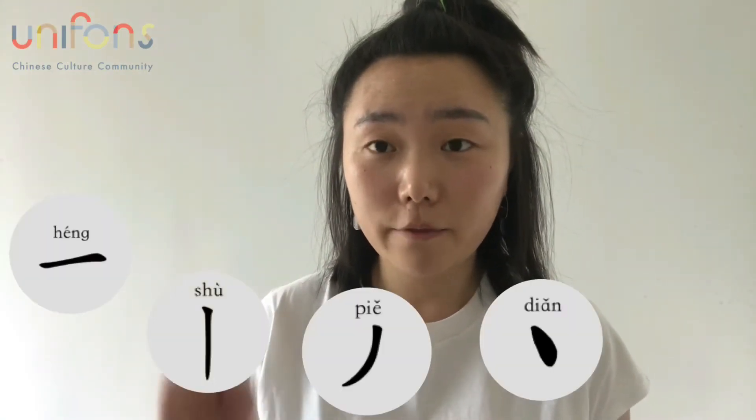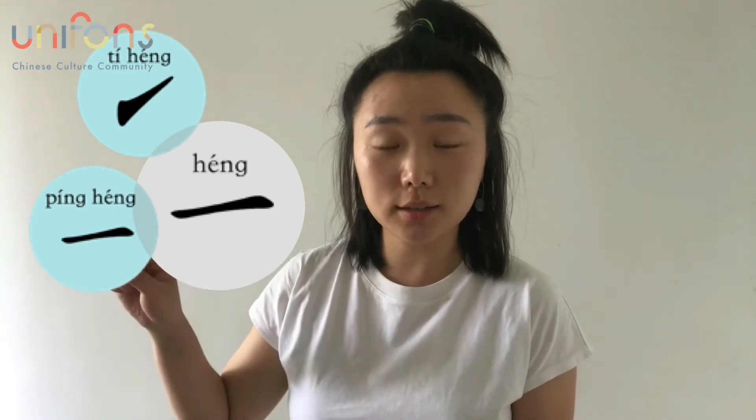We use green color to represent the five main strokes, and there are different members in each main stroke family. We use blue color to represent the members of Heng, orange color to represent the members of Shu, and lemon yellow to represent the members of Pie. And we use green color to represent the members of Dian.